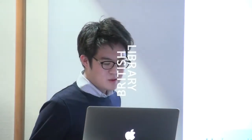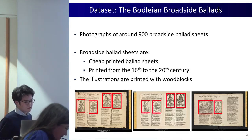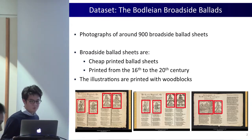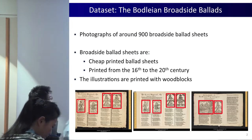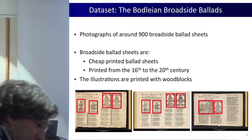Today I'm going to demonstrate how we can use fairly standard computer vision techniques to generate new representations of art collections that are better suited for analyzing the history of our block illustrations. We illustrate our methods on the Bodleian Ballads collection, which shares many similarities with the new British Library dataset. It consists of ballad sheets printed from the 16th to the 20th centuries, containing text and illustrations.